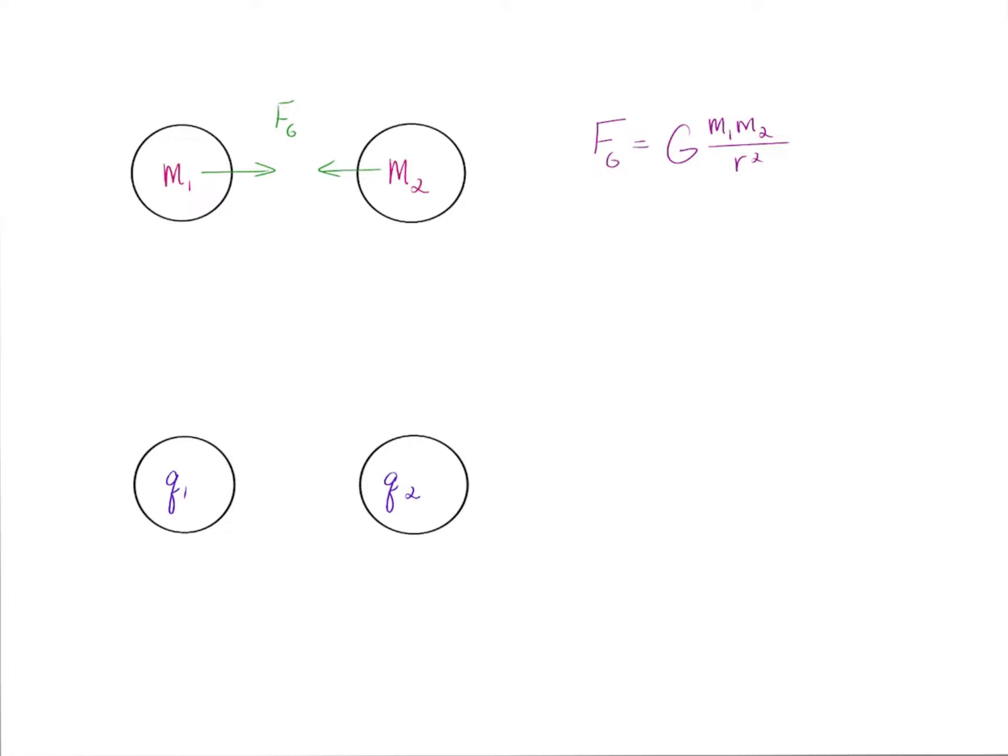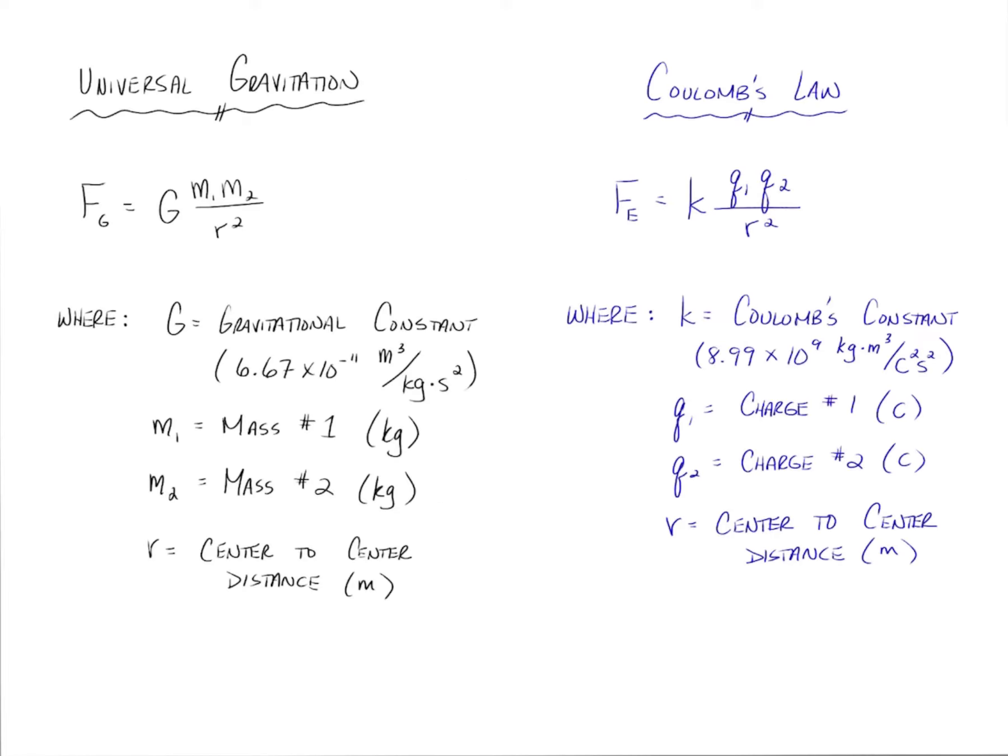All right, so to look at it in a little bit more depth, let's get everything down on paper. So universal gravitation, which we should already have, is FG equals G M₁M₂ over r squared, and you can see the listed variables: mass 1, mass 2, the center-to-center distance, and so forth.